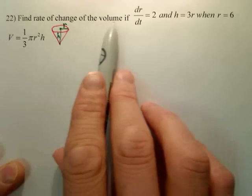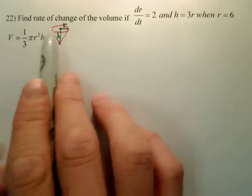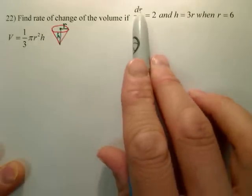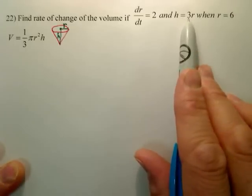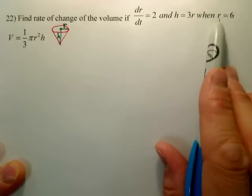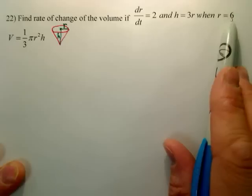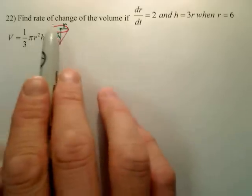If I want to find the rate of change of the volume of a cone, here's the formula. Knowing dr/dt is this, knowing h is always three times the radius, and when r is six, or the radius is six, I want to find dV/dt.